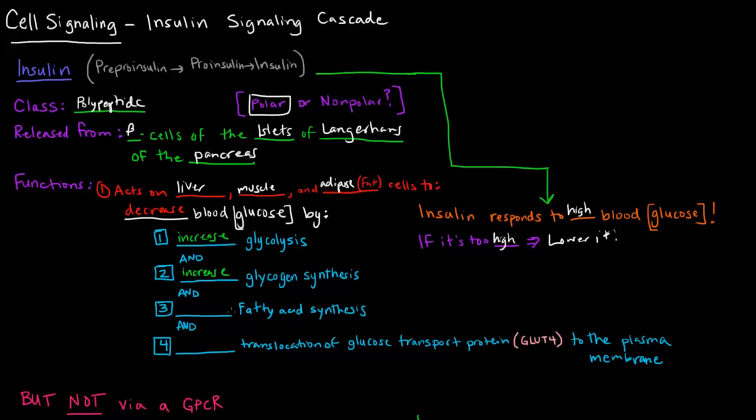Will it increase or decrease fatty acid synthesis? It'll increase fatty acid synthesis, basically, because fatty acid synthesis is a way to store energy. If you have blood glucose level around, then you can take that glucose and eventually just store it as a fatty acid. In addition, it can also increase the translocation of glucose transport protein, which is GLUT4, to the plasma membrane.